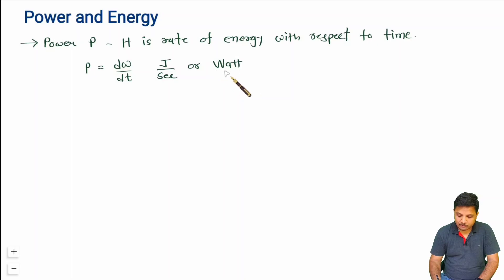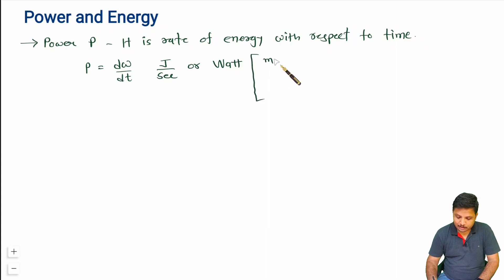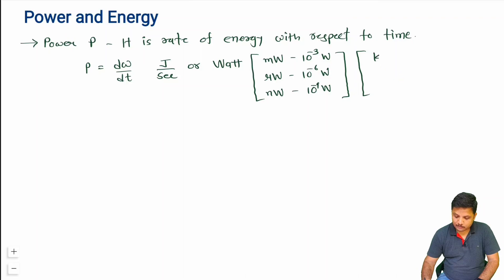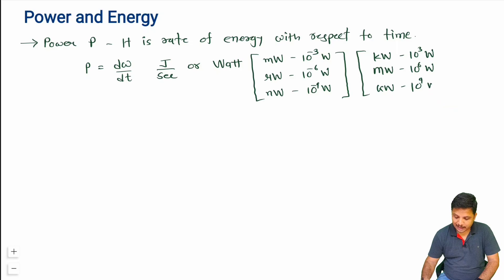We can express watt at different scales. Smaller units include milliwatt (10⁻³ watt), microwatt (10⁻⁶ watt), and nanowatt (10⁻⁹ watt). Larger units include kilowatt (10³ watt), megawatt (10⁶ watt), and gigawatt (10⁹ watt). That is how different scales of power are used.